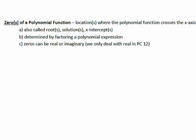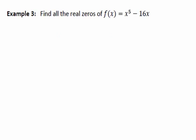When we sketch and graph polynomial functions, we need to find zeros. The zeros of a polynomial function are where it crosses the x-axis — also called roots, solutions, or x-intercepts. We must factor a polynomial to find zeros, bringing all our factoring rules back into play. Zeros can be real or imaginary, but in this course we'll only deal with real zeros.